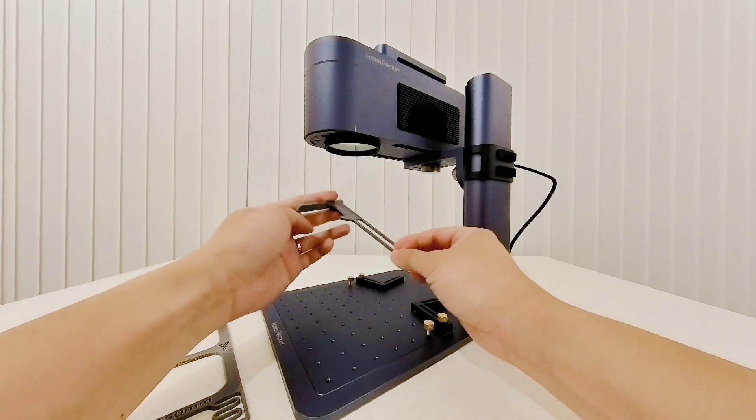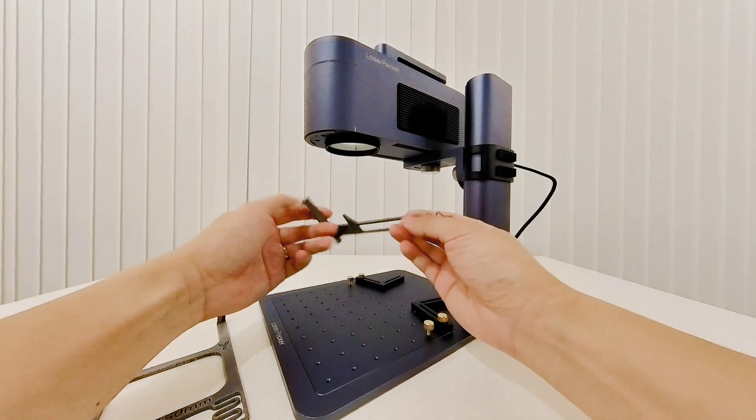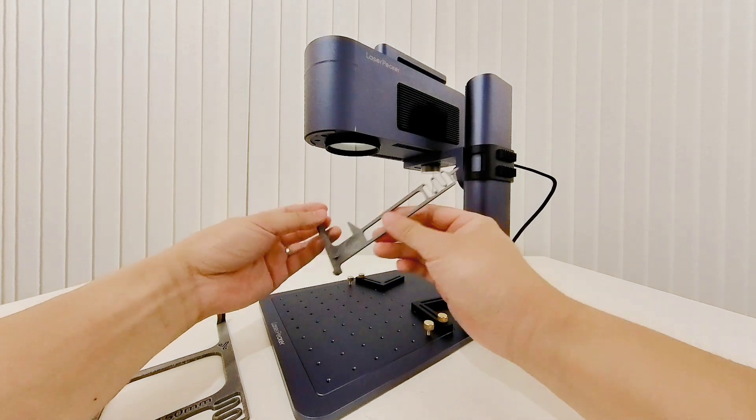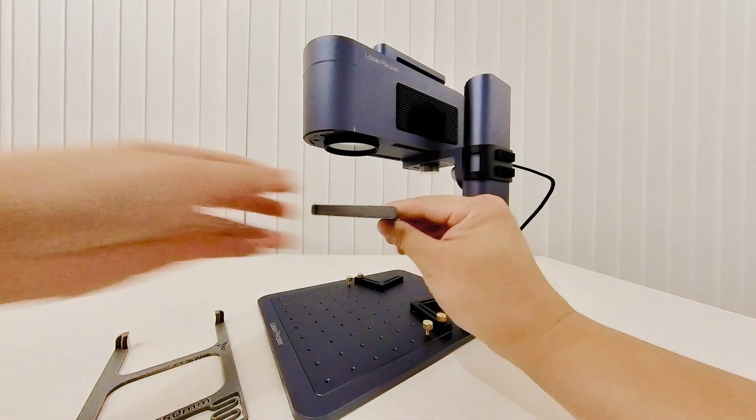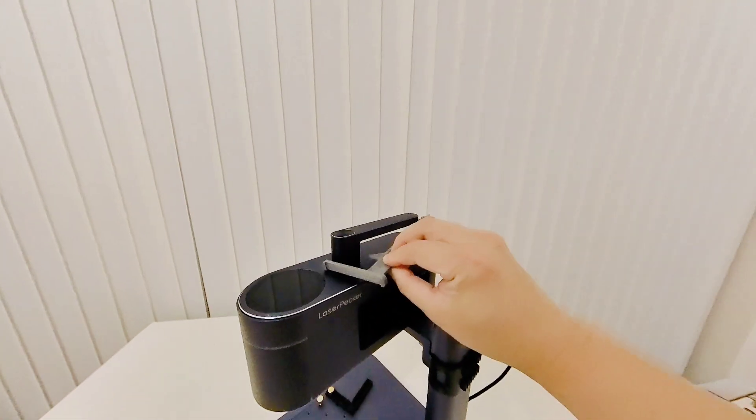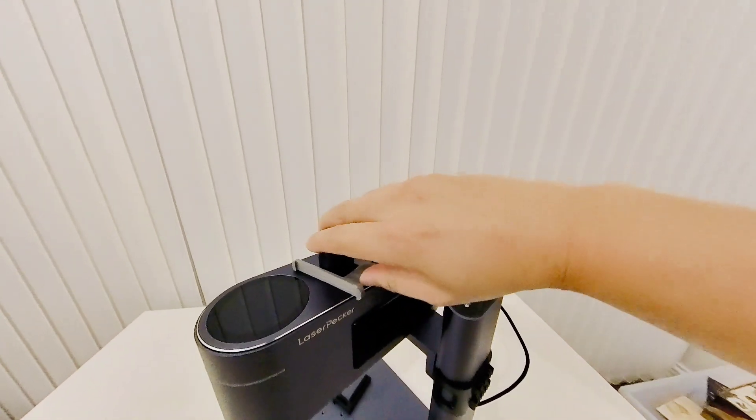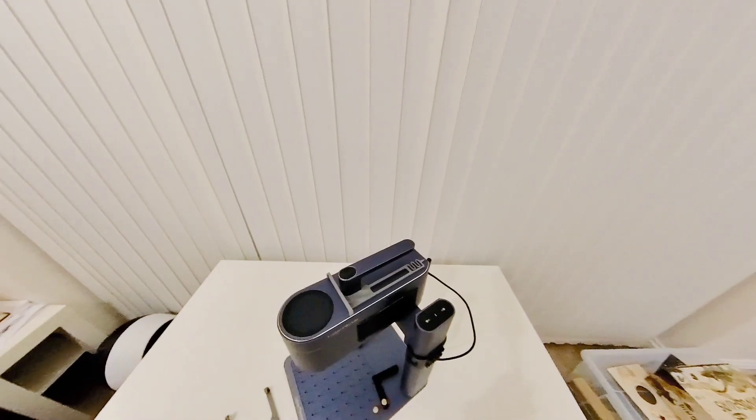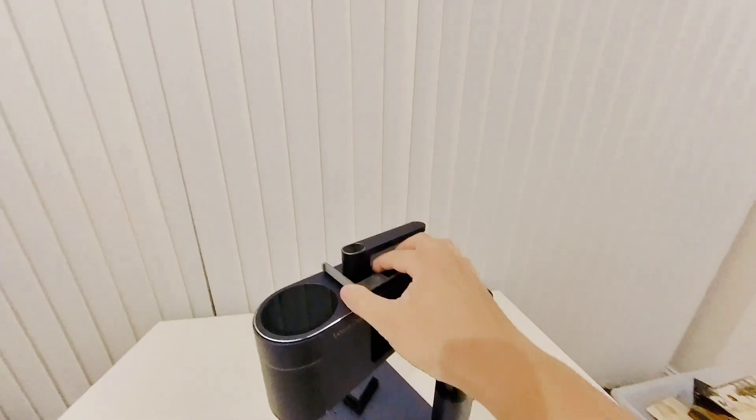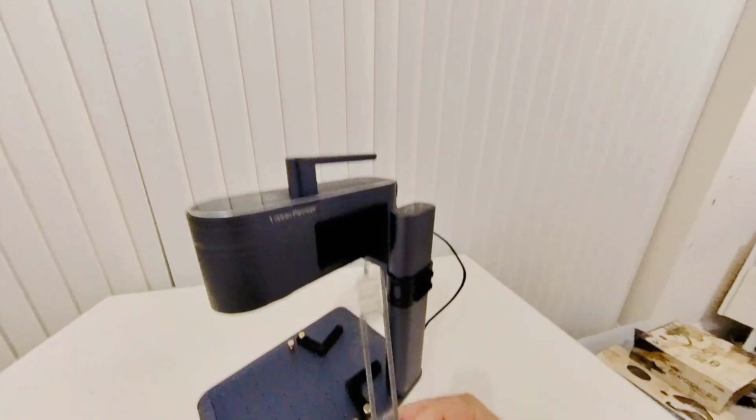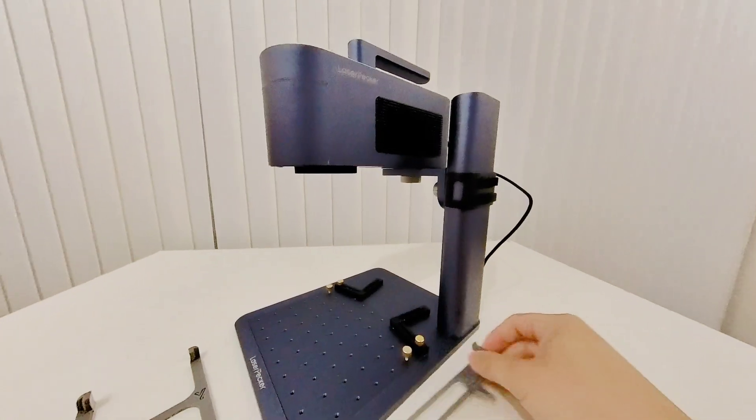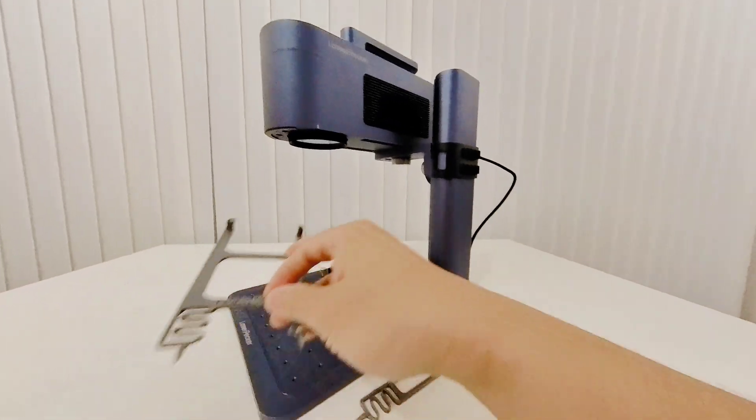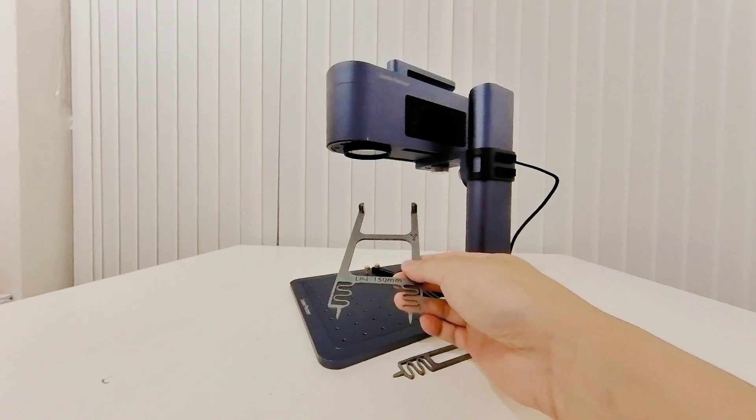When you don't use this or when you're traveling with your engraver, you can clip this onto the handle like so and then you can remove it easily. And this is the double probe version.